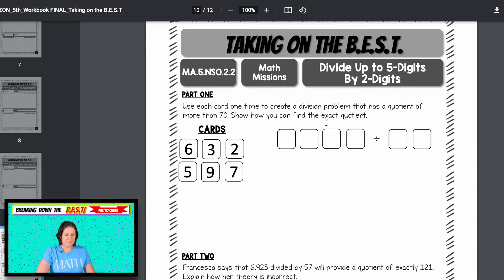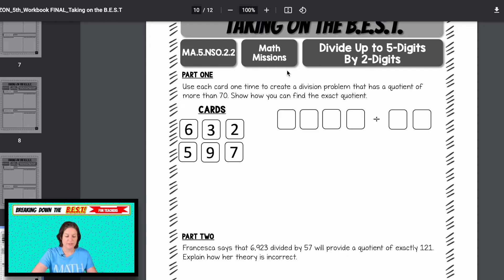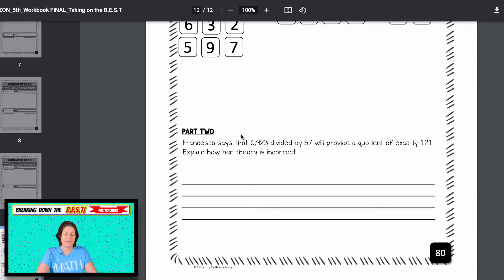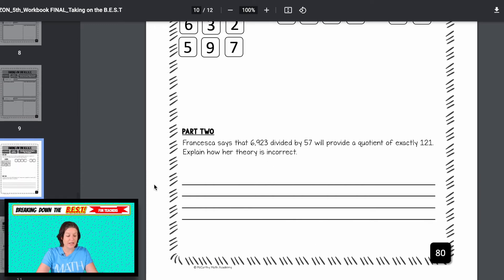So then this math mission right here, a math mission is like a math task. Okay, it's usually a multi part question. Here it says use each card one time to create a division problem that has a quotient of more than 70. Show how you can expect to find the exact quotient. So your students would have to take, use these digits here, create a dividend, create a divisor that has a quotient that's more than 70. That's a lot of thinking going on there. And then here we have somebody who tried it, and got a quotient of this, explain how her theory is incorrect.